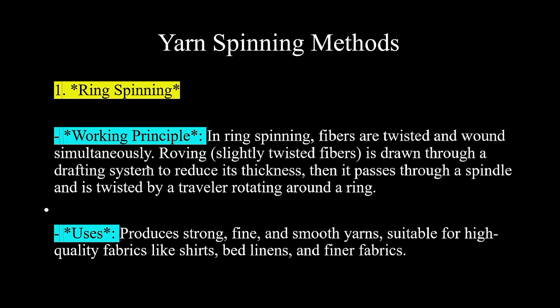First, drafting is done as roving passes through the drafting system — the weight per unit length changes, reducing its thickness. Second, twisting is done between the end of the drafting system and the traveler. Third, it is wound on the ring bobbin. So the three activities are: first drafting, second twisting, and third winding in the ring spinning method.